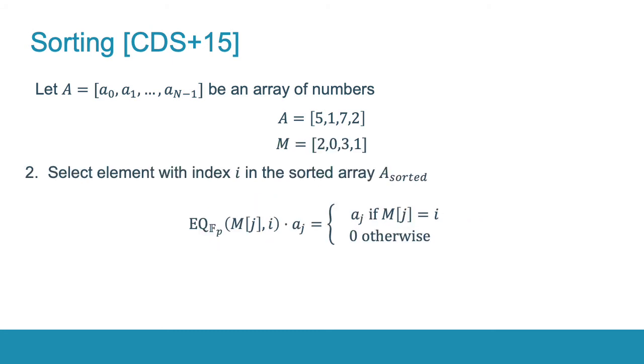In the second step, we create a new array by homomorphically selecting entries of A using the information from the array M. The selection uses the fact that this product of the equality function and element AJ is equal to AJ if and only if the position of AJ in the sorted array is equal to I.